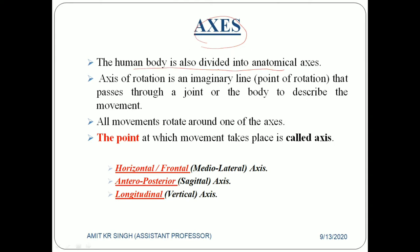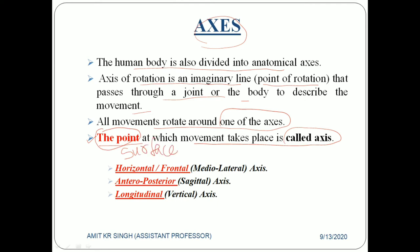The human body is also divided into anatomical axes. The axis of rotation is an imaginary line or point of rotation that passes through a joint or the body to describe the movement, and all movements of our body rotate around one of the axes. In easy terms, the point at which the movement takes place is called the axis. There are three varieties: frontal axis, sagittal axis, and vertical axis.